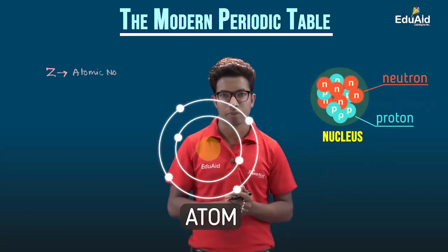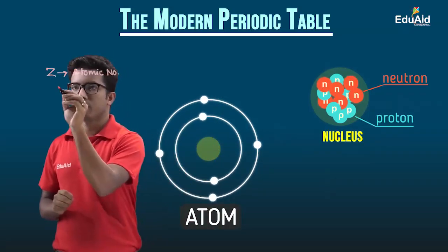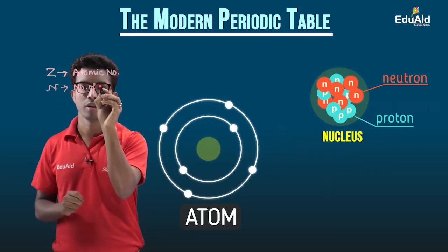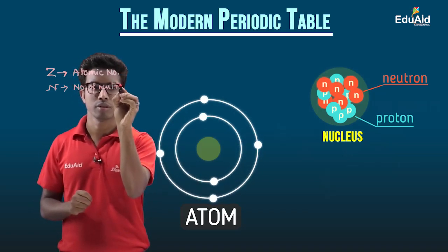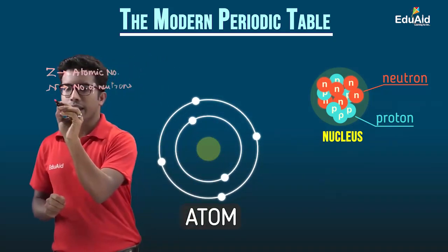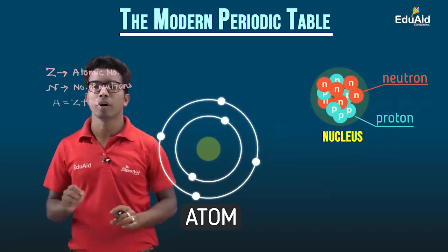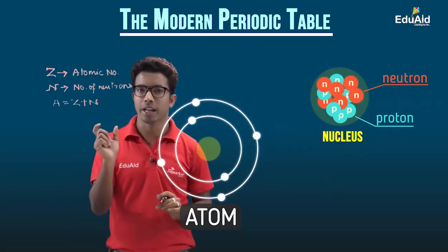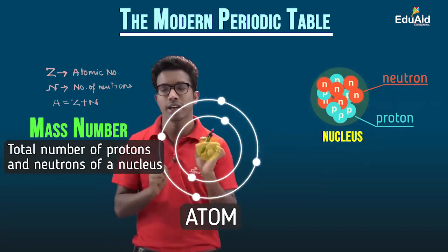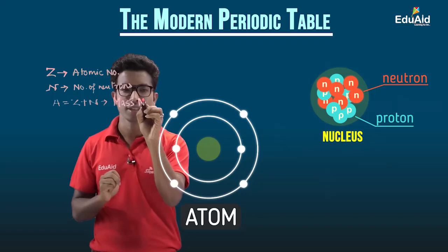Along with atomic number, we should also know the standard way to denote the number of neutrons. N is used to represent the number of neutrons, which are present in the nucleus along with the protons. There is another term, A, which equals Z plus N. This A is the total number of protons and neutrons, and it is called the mass number — the total number of protons and neutrons in the nucleus.